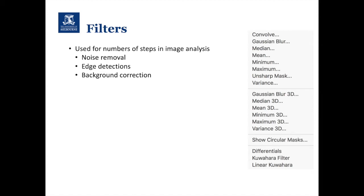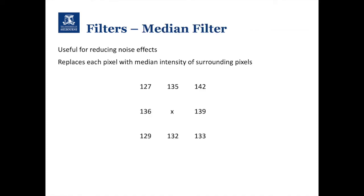Another tool is filtering, with examples including noise removal, edge detection, and background correction. The first is the median filter, which is really useful if you've got very noisy images. It replaces the middle pixel with the median intensity of the surrounding pixels. One downside is that if you have a lot of pixels it can take some time to perform the median filter calculation.